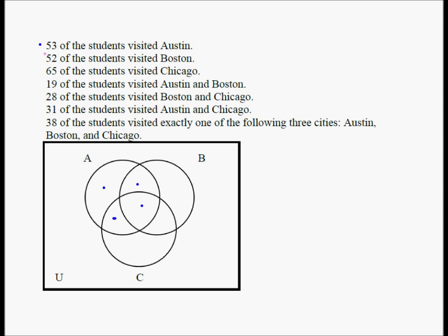52, the number of students who visited Boston, should be the sum of its four regions, because some students who visited Boston could have also been to the other two cities. Similarly, 65 is the sum of the four numbers in the Chicago circle.